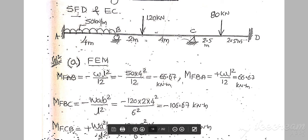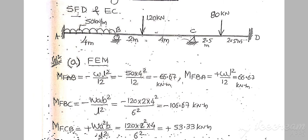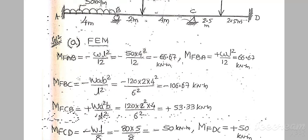For calculating fixed end moments, you should consider individual spans. For each individual span you can calculate: span AB and BA, then BC and CB, then CD and DC.